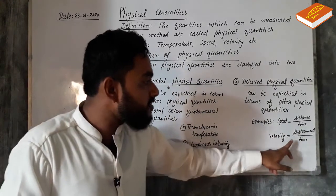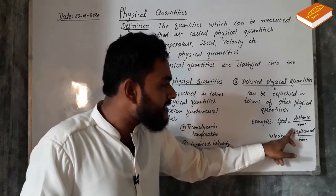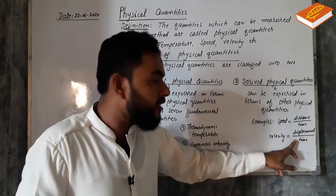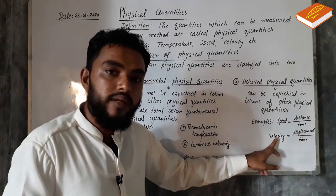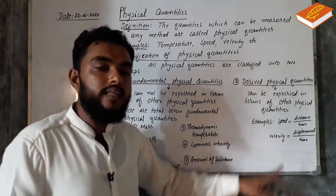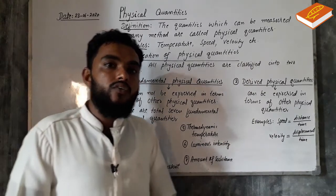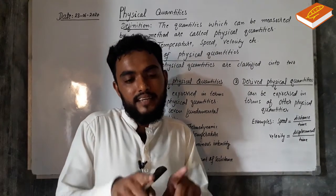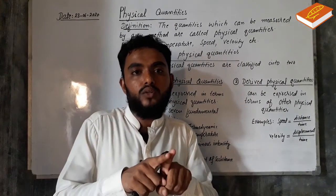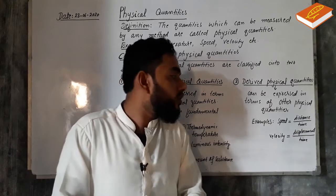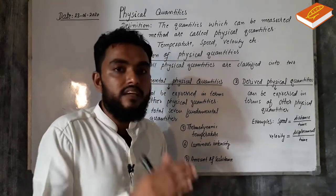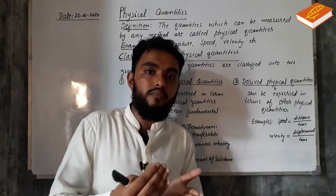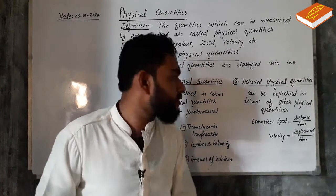For example, velocity means displacement divided by time, and that gives you velocity. The formula for force (F) is mass (m) multiplied by acceleration (a). Even distance divided by time — there are so many examples of derived quantities.